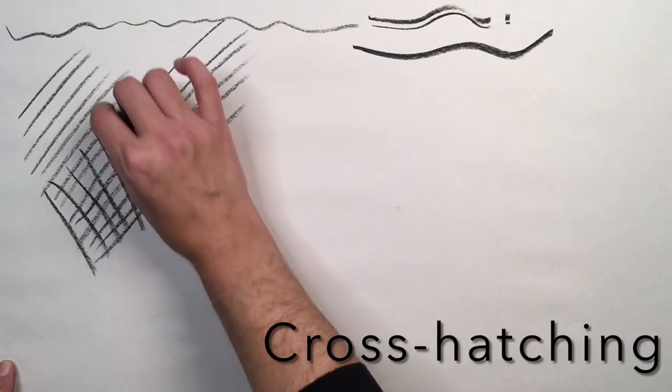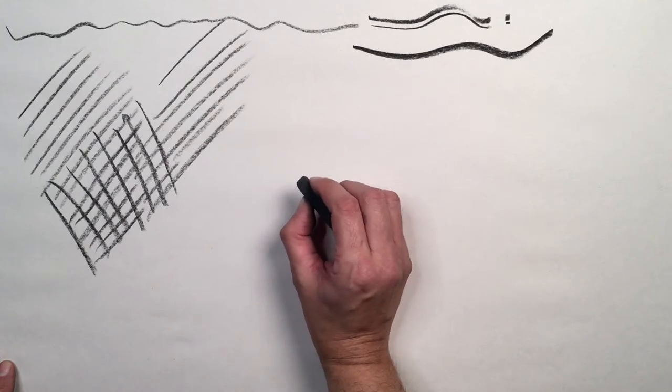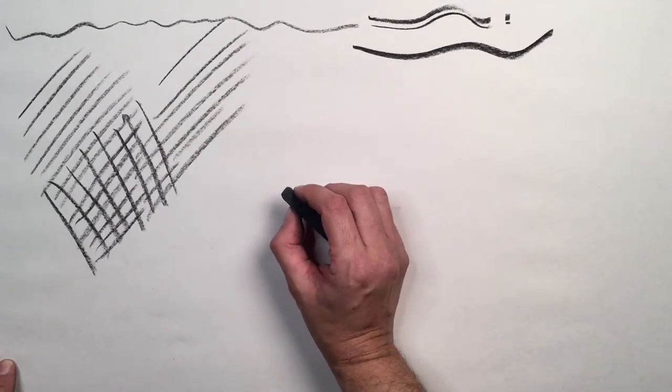And in order to do cross hatching we're just going to draw some more parallel lines but this time they're going to go across the lines that we drew in the first place.